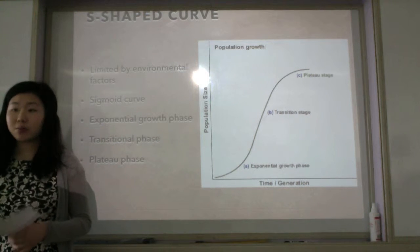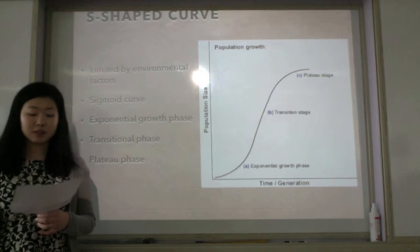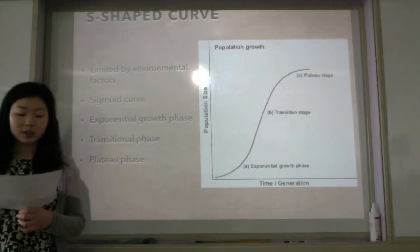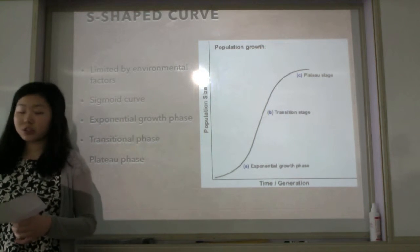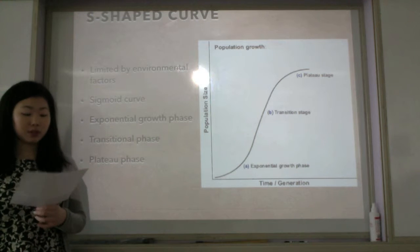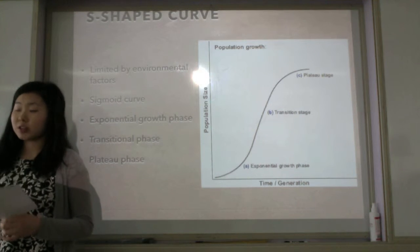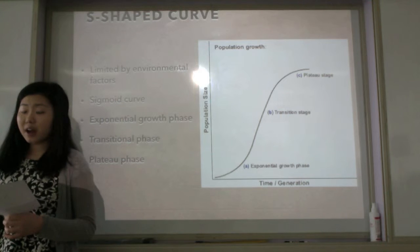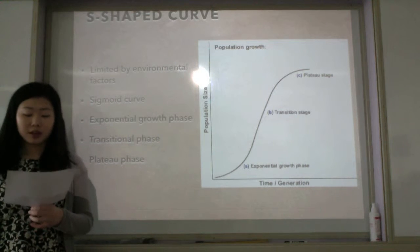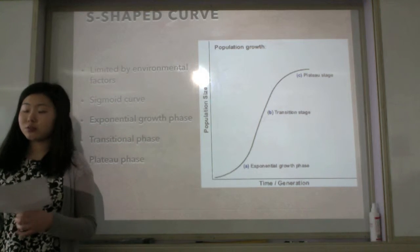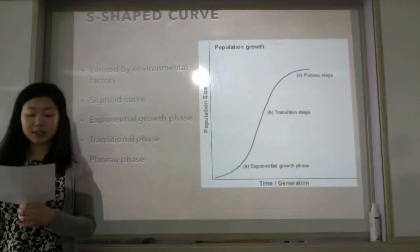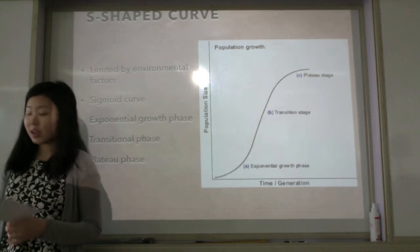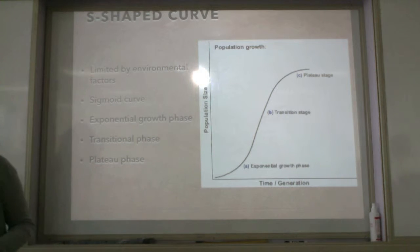The S-shaped curve shows how a population becomes limited by environmental factors. Also known as a sigmoid curve, this graphical representation shows the initial gradual increase in population size followed by an exponential increase, and finally a phase of decline to arrive at a nearly constant level. The curve can be broken down into three phases: exponential growth phase, transitional phase, and plateau phase.